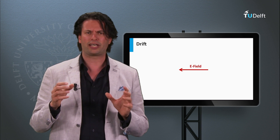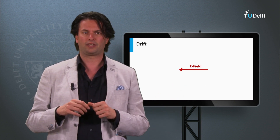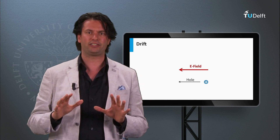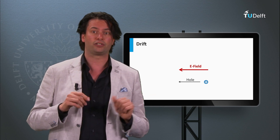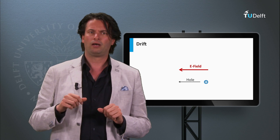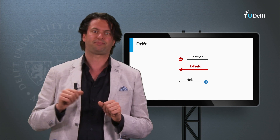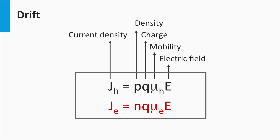Charged particles like electrons and holes can also be moved under the influence of an electric field. Consider an electric field pointing to the left. A positively charged hole will experience a force in the direction of the electric field — to the left — and will start moving in that direction. A negatively charged electron will experience a force in the opposite direction and will start moving to the right. The current density induced by an electric field is given by the product of the electron density n, the electron charge q, the mobility constant mu, and the electric field E. Similarly, the hole current density is given by the product of hole density p, charge q, mobility mu, and electric field E.